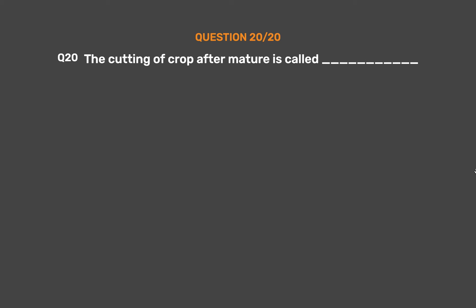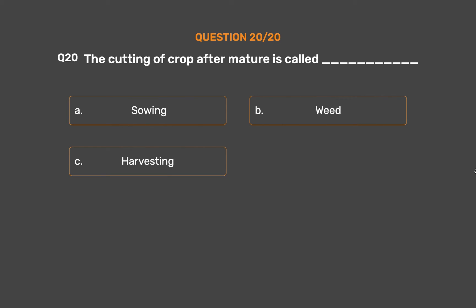Question No. 20: The cutting of a crop after it is mature is called ___. Option A: Sowing. Option B: Weed. Option C: Harvesting.